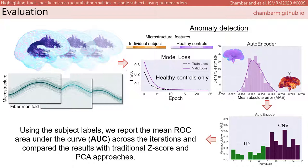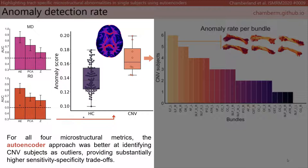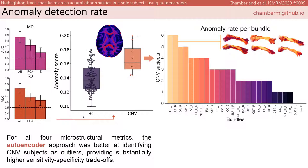We then evaluate the mean area under the curve of the ROC curve across iterations, and compare our approach with traditional z-score and principal component analysis, using the Mahalanobis distance as anomaly scores. For all four microstructural metrics, the autoencoder approach was better at identifying CNV subjects as outliers, providing substantially higher sensitivity-specificity tradeoffs. In particular, the RISH-0 feature showed a higher discriminating power with an area under the curve of 0.86 compared with the mean univariate z-score and multivariate PCA approaches. This could potentially be explained by the framework's ability to handle high-dimensional data non-linearly.